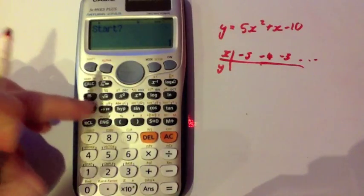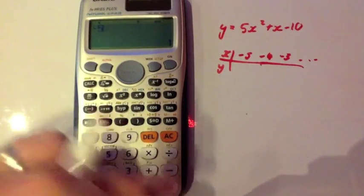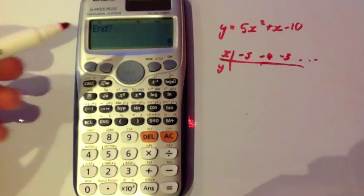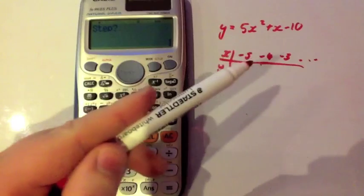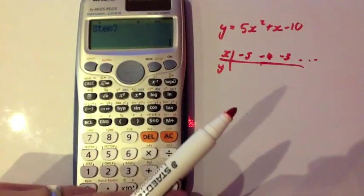So I might start at minus 5, press equals. Just press minus 5 and press equals. And let's stop at 5. So press 5 and equals. And step, as you can see we're going up in 1's. So let's press 1 and then equals.